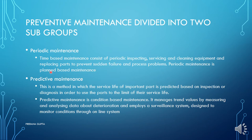Periodic maintenance is plant-based maintenance. Predictive maintenance is the method in which the service life of an important part is predicted based on inspection or diagnosis, in order to use the parts to the limit of their service life. Predictive maintenance is condition-based maintenance — it manages trend values by measuring and analyzing data about deterioration and employs a surveillance system designed to monitor conditions through an online system.